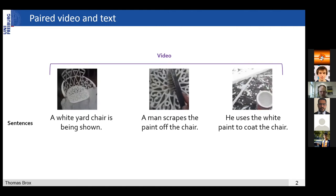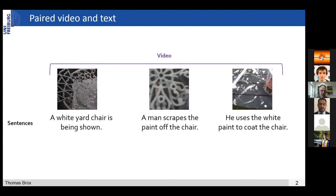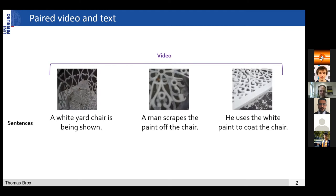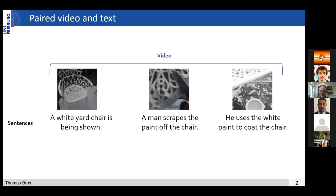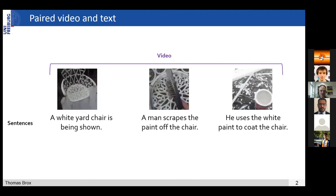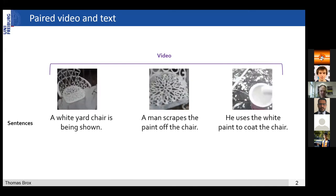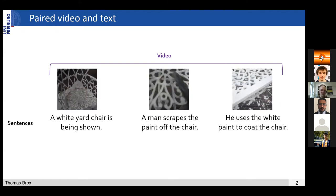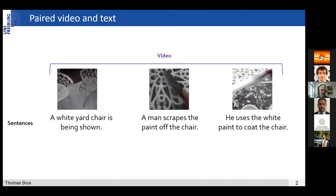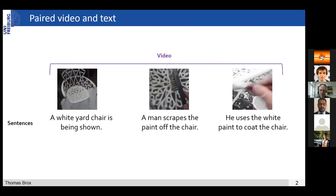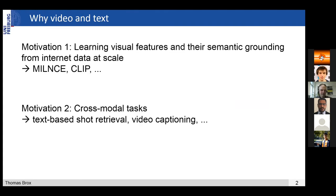The nice thing is that on one hand you have the videos which show visual features, and on the other hand you have text which describes the semantics — and that's something you typically don't get for free. We all grew up in the era of class labels where everything had to be annotated. The nice thing with video and text is that you can potentially get this text for free. It's not ideal because very often some curation has to be done, but the prospect is there that at one point you can do it completely unsupervised.